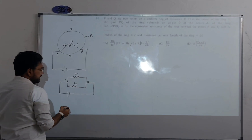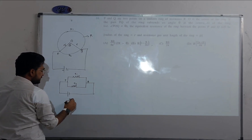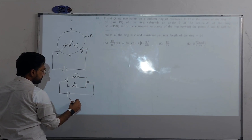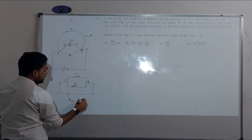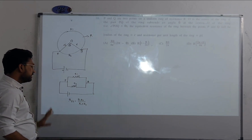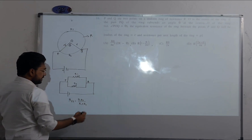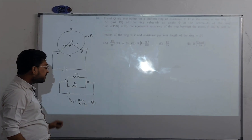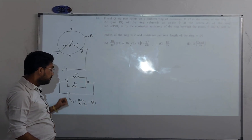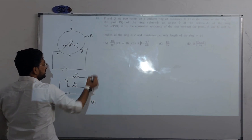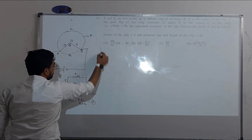For a parallel combination, the equivalent resistance is R_eq = (R1 × R2) / (R1 + R2). Now the main task is to find the values of R1 and R2.